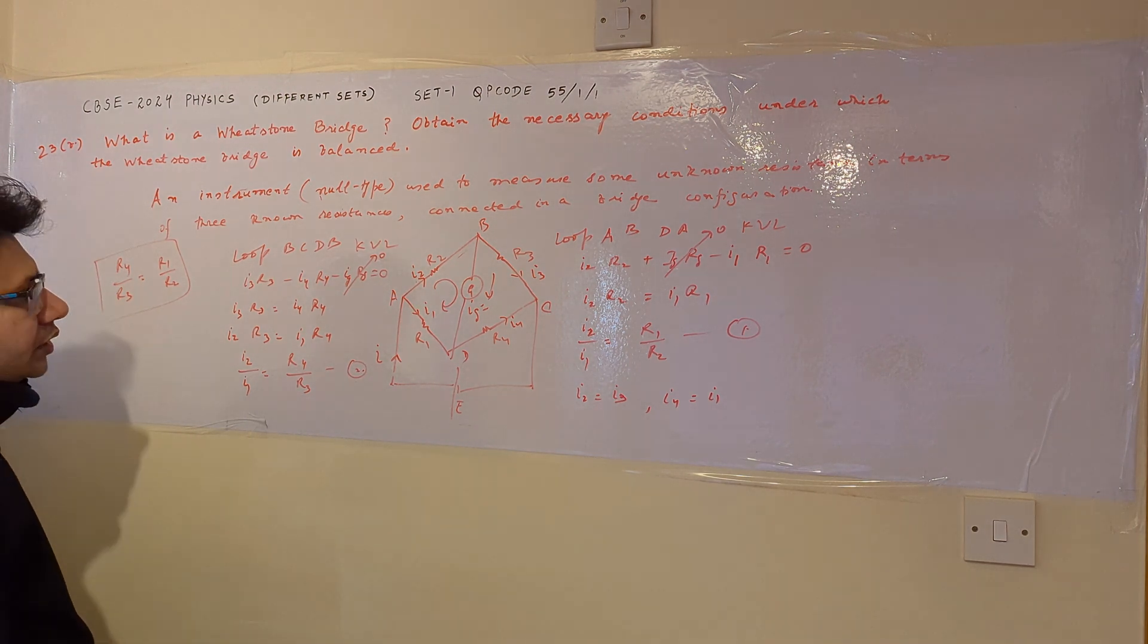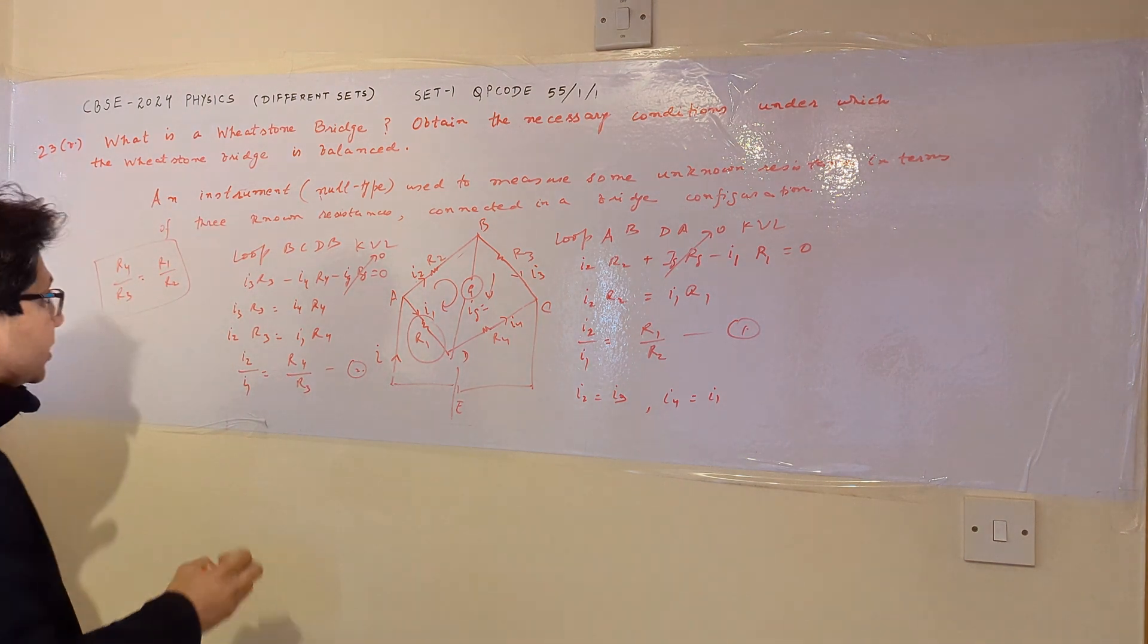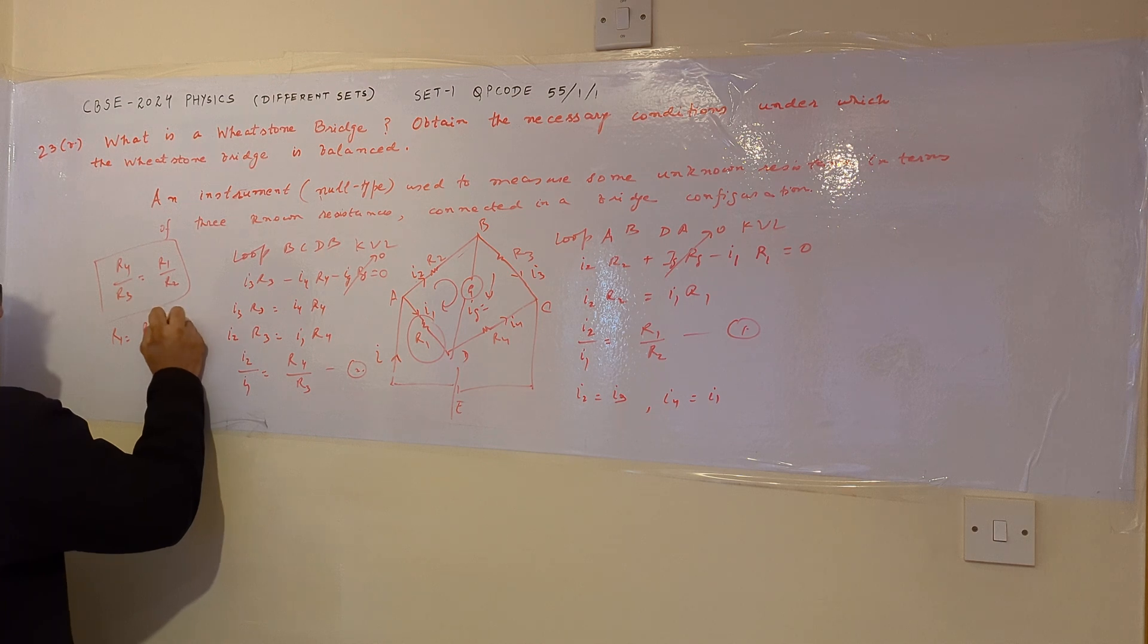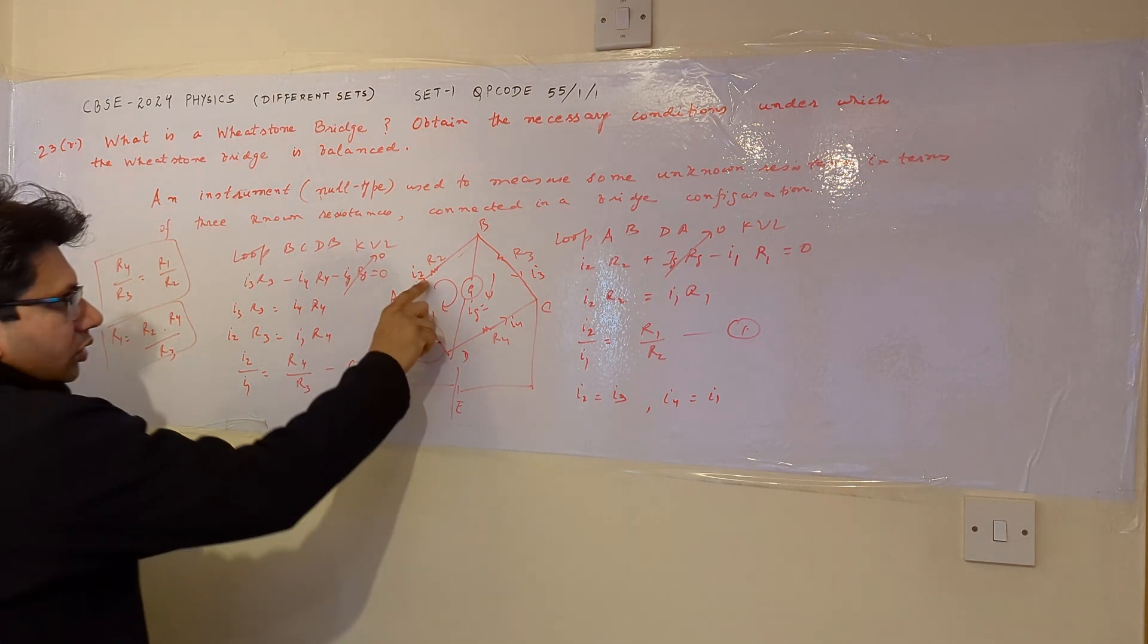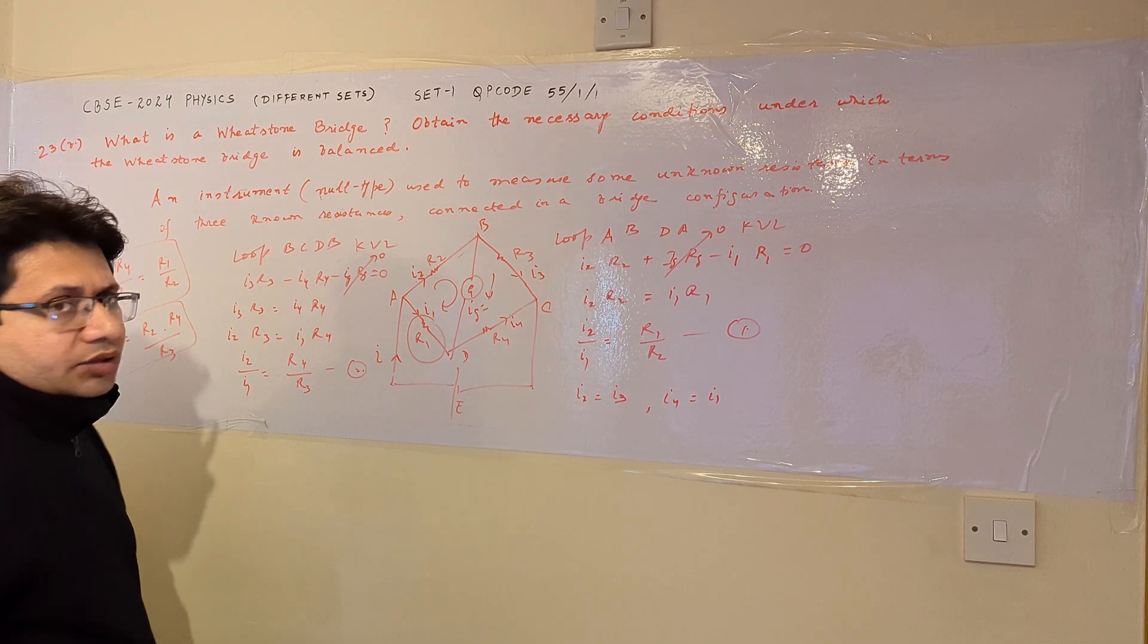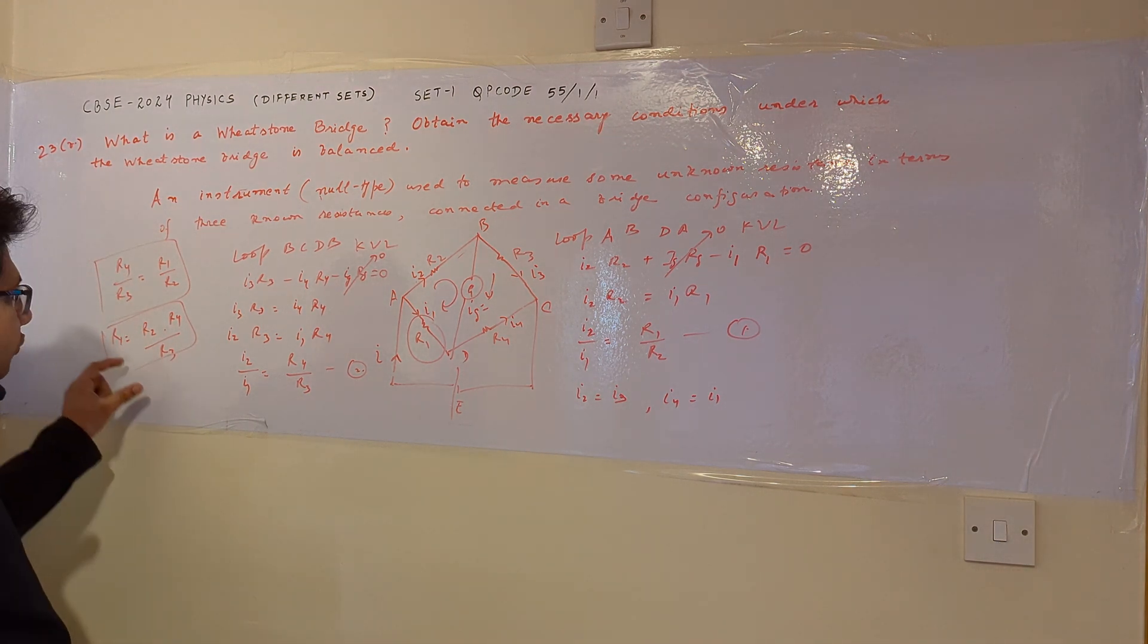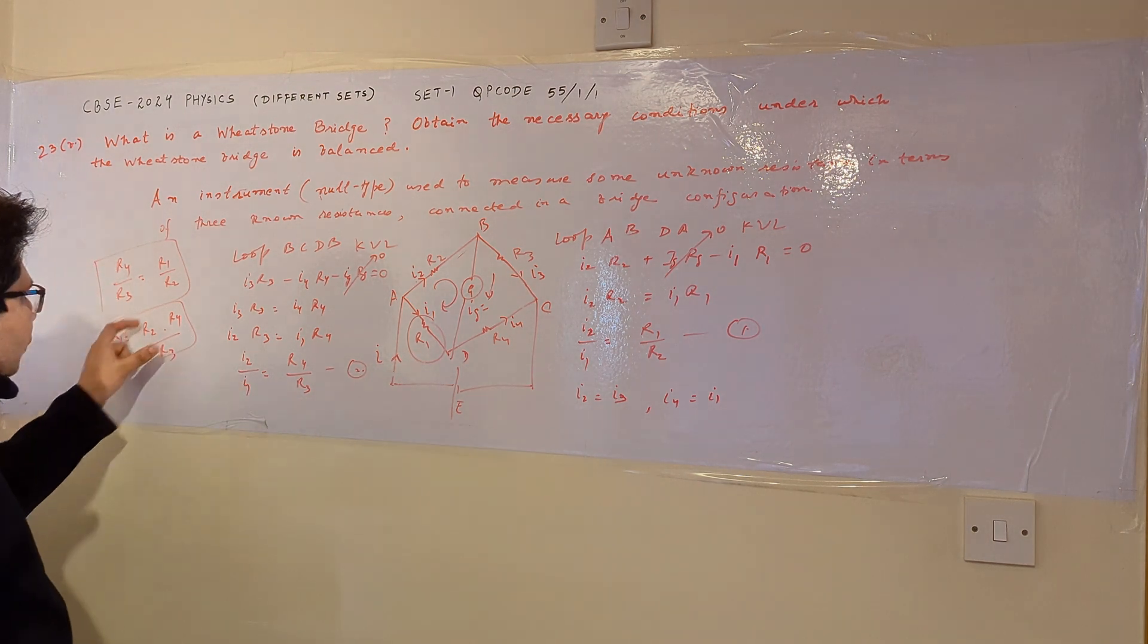Or in other words, if we choose this resistance R1 as the unknown resistance, then R1 is equal to R2 times R4 by R3. Where R2, R4 and R3 are the known resistances. So this is the particular formula to calculate the unknown resistance R1 in terms of other resistances.